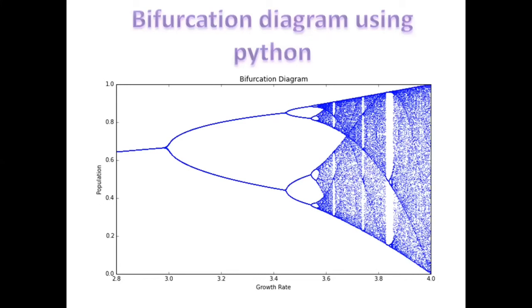Okay, now I'm going to explain this like, like we saw earlier that for R less than 3, X always finds a single stable point. You can also see over here for R here, this is growth rate R here. This is equilibrium population here. For R less than 3, X always finds a single stable point.